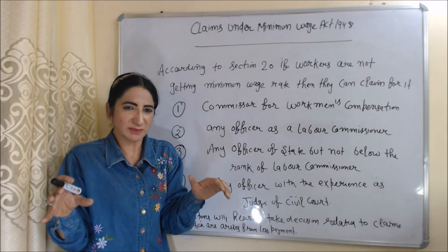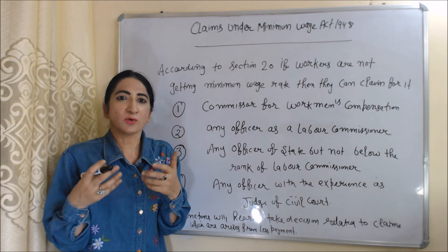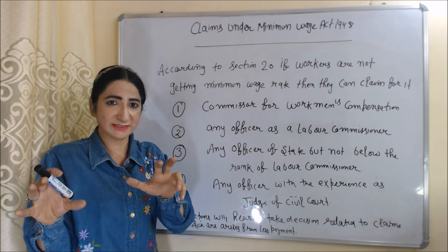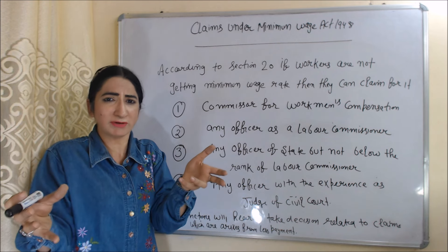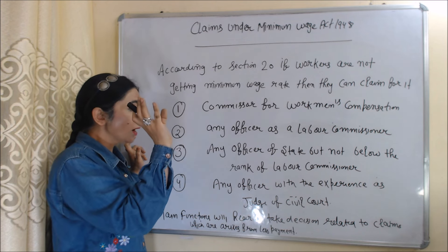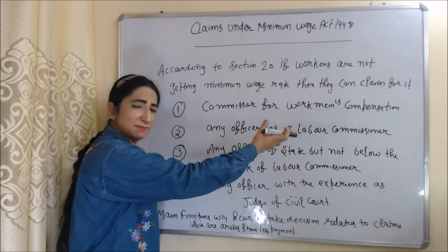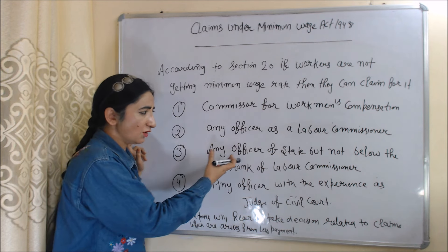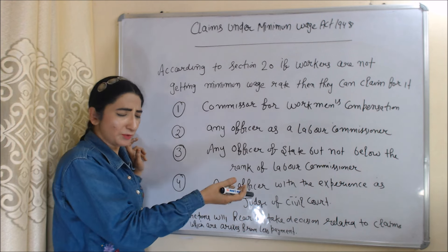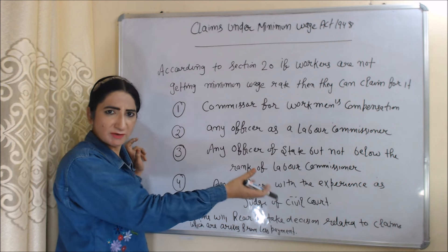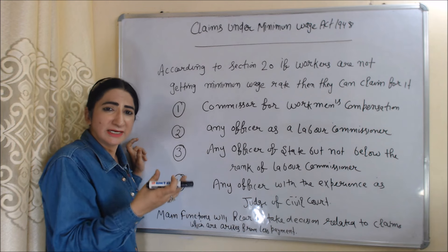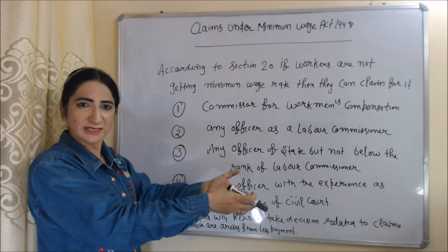Now we will see claims under the Minimum Wages Act 1948. According to Section 20, if workers are not getting the minimum wage rate, they can file a claim. To resolve these claims, the government can appoint a commissioner for workman's compensation, or a labor commissioner, or any officer of the state not below the rank of labor commissioner, or any officer with experience as a judge of a civil court. Whoever is appointed, their main function will be to hear and take decisions related to claims arising from underpayment.